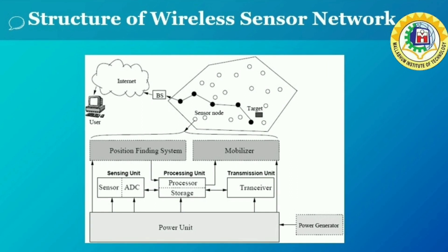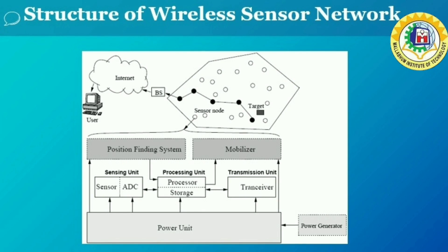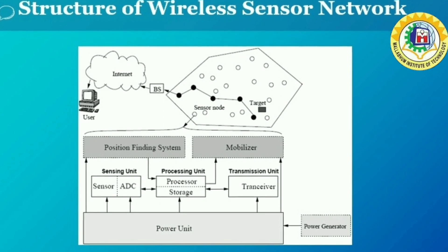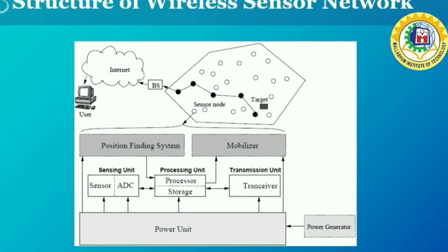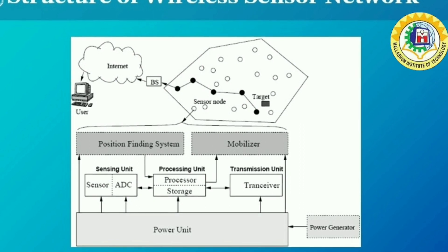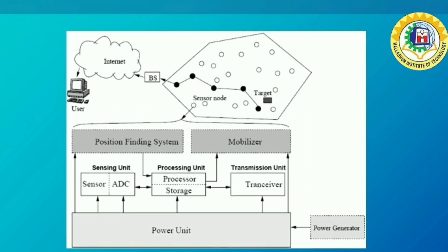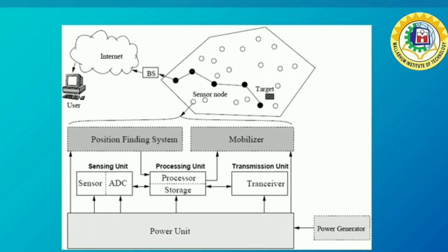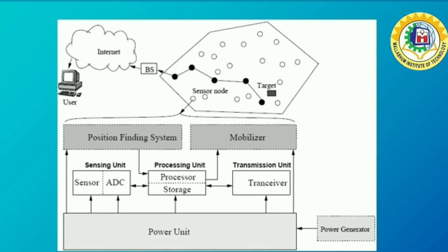This is the structure of a wireless sensor node. A sensor node is made up of four basic components: sensing unit, processing unit, transceiver unit and a power unit. Each node typically has several parts: a radio transceiver with an internal antenna or connection to an external antenna, a microcontroller, an electronic circuit for interfacing with the sensors, and an energy source, usually a battery or an embedded form of energy harvesting. It also has a location finding system, a power generator and a mobilizer.